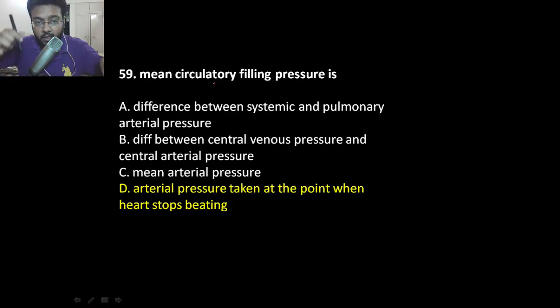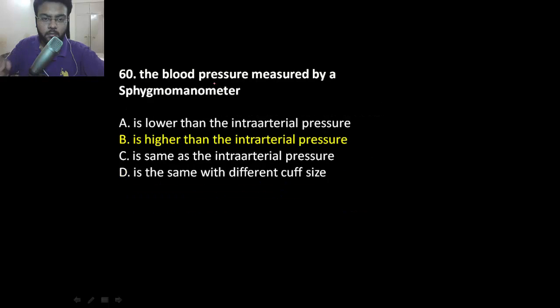The blood pressure measured by sphygmomanometer is always higher than the intra-arterial pressure. Because when you measure the blood pressure with the help of a cuff, it first forces the skin, then muscles, then it inflates the brachial artery. So this extra amount of force needed due to skin and muscle is adding up to the blood pressure which we are measuring with the help of the cuff. So it's higher than the actual intra-arterial pressure.